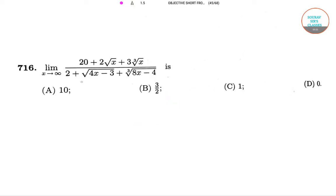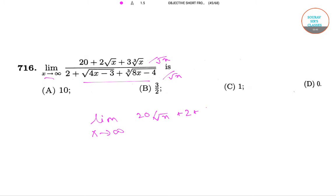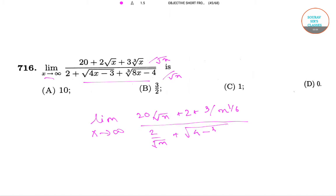In the next question, we have to find the value of this expression when x tends to infinity. Dividing both numerator and denominator by root x, we will have the limit as x tends to infinity of (20 by root x plus 2 plus 3 divided by x to the power 1 by 6) divided by (2 by root x plus root of (4 minus 3 by x) plus 1 by 8x minus 4) to the power 1 by 6.